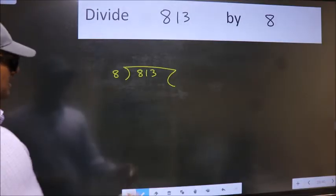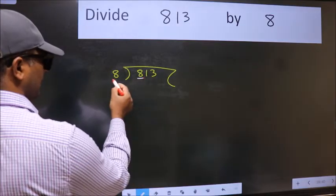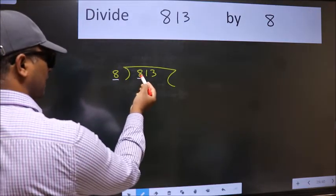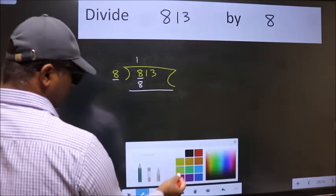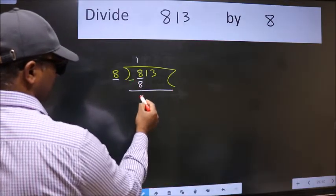Next, here we have 8 and here 8. When do we get 8 in the 8 table? 8 once is 8. Now we should subtract. We get 0.